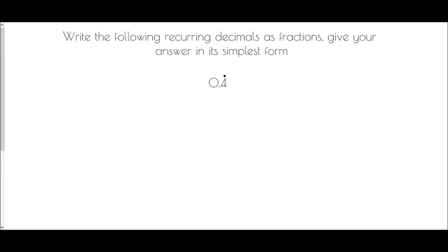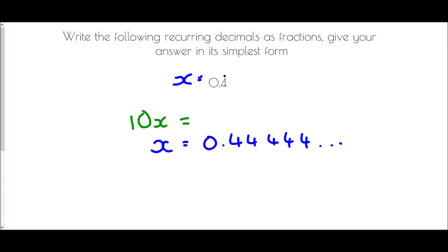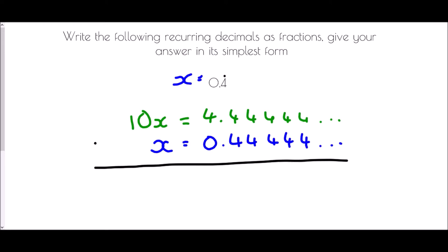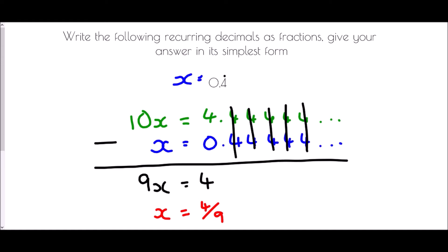Let's do the same for 0.4 recurring. We call this value x and write it out as 0.44444 and so on. Again, there's only one digit repeating, so we multiply by 10 to get 4.44444 and so on. Subtracting gives 9x equals 4. Dividing by 9 gives x equals 4 ninths. Therefore 0.4 recurring is 4 ninths.